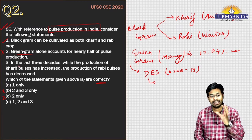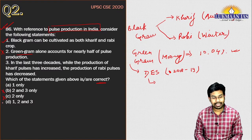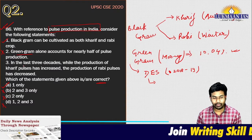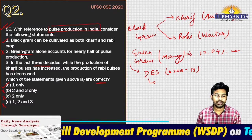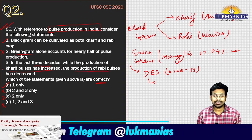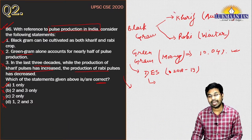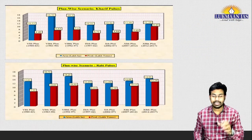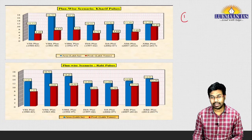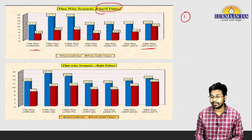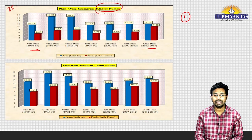Since statement two is incorrect, we can eliminate option D. The correct answer for this question is option A — statement one only. Let us also read statement three, which says: in the last three decades, while production of kharif pulses has increased, production of rabi pulses has decreased. This is incorrect. Looking at five-year plan data from the sixth to the twelfth plan, spanning over 35 years, the production of kharif pulses has overall increased.